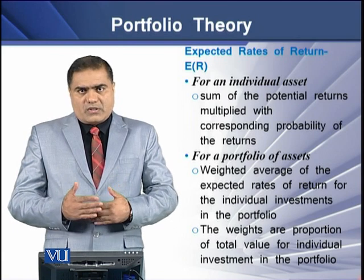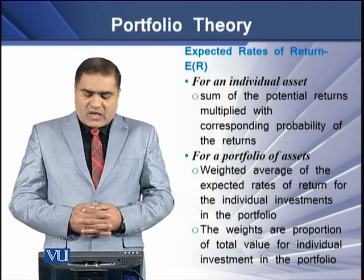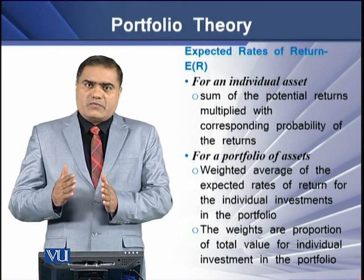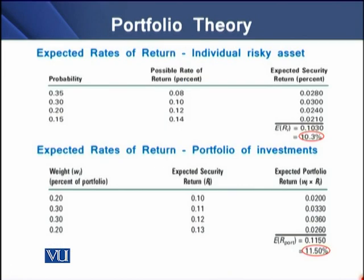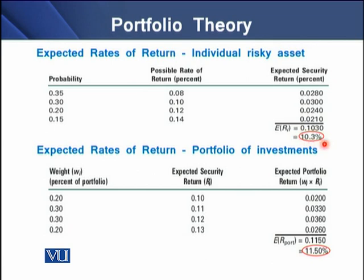How to determine these weighted averages? Basically, these weights are the proportion of the total value of individual investment in the portfolio. To determine the expected rate of return for individual assets, let's take an example. We have four probabilities with assigned probability levels and for each probability we have a corresponding rate of return. When we multiply this possible rate of return with the probability, we have the expected rate of return. The sum of these rates of return is then termed as the expected rate of return for an individual risky asset.